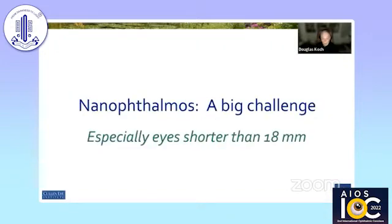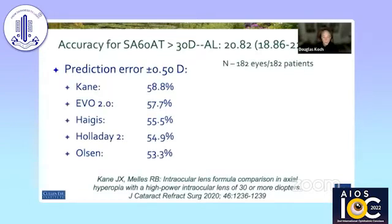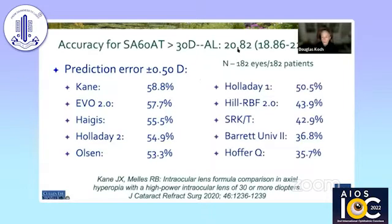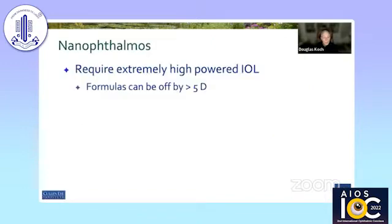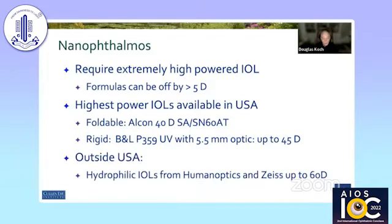What about nanophthalmos, which is an extreme version — eyes less than 18 millimeters? IOL calculations are unpredictable. A study from Kane reporting various formulas in patients ranging from 18.86 to 22.45 mm showed well below 60% within a half diopter of target. In nanophthalmos, we require very high powered IOLs, and formulas can be off by one to five diopters or more. In the US, we're limited to a 40-diopter foldable and a 45-diopter one-piece PMMA with a 5.5 optic. In India, you likely have access to higher-powered models from Human Optics and Zeiss.